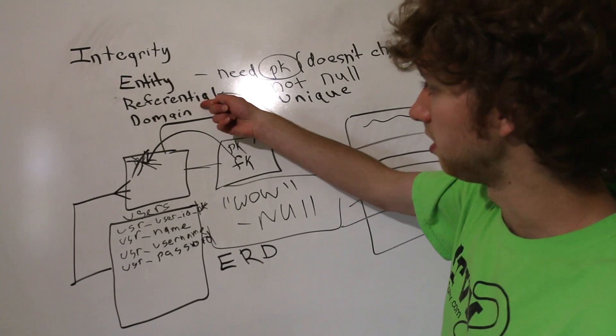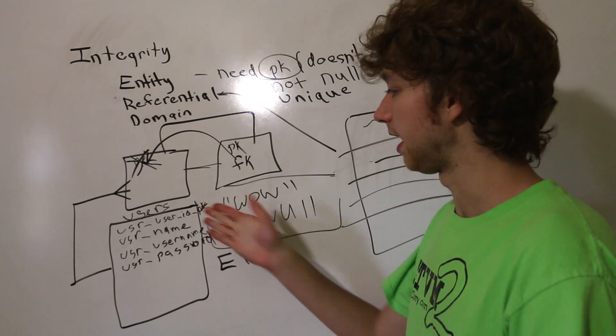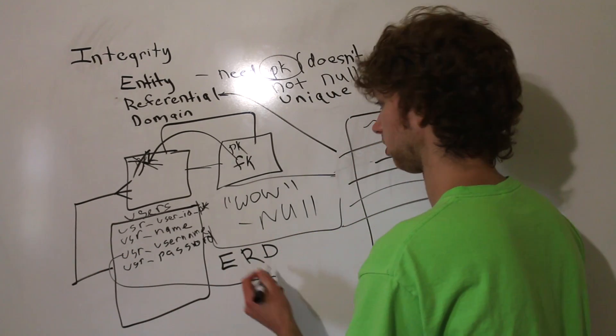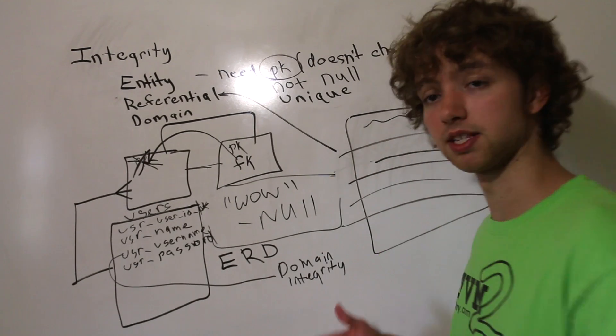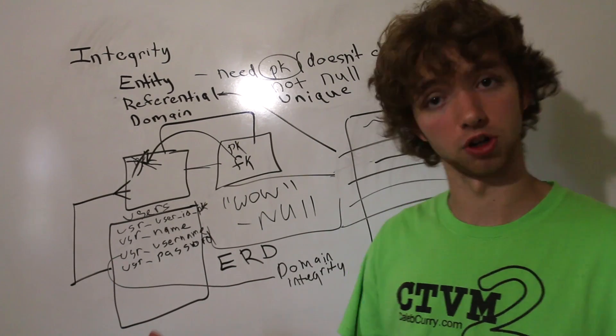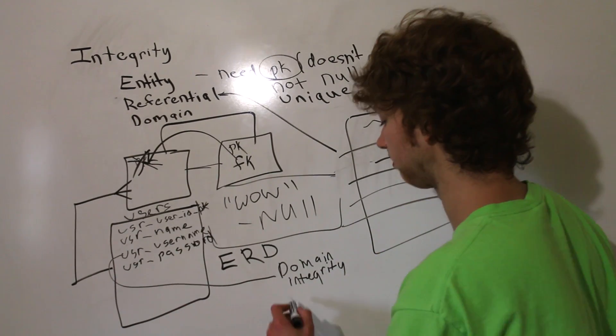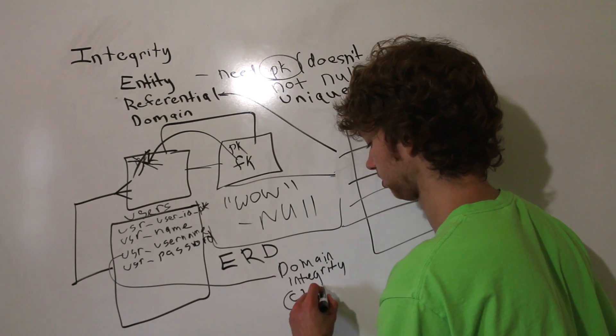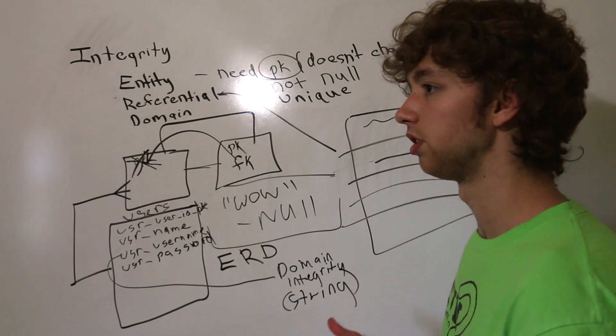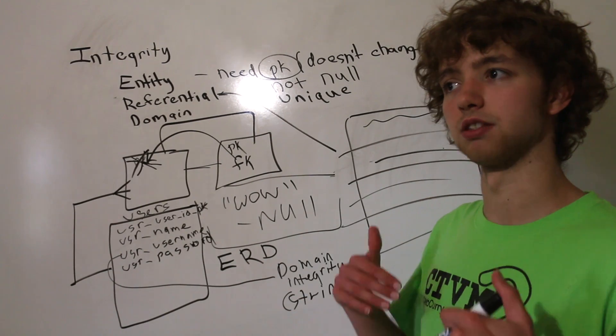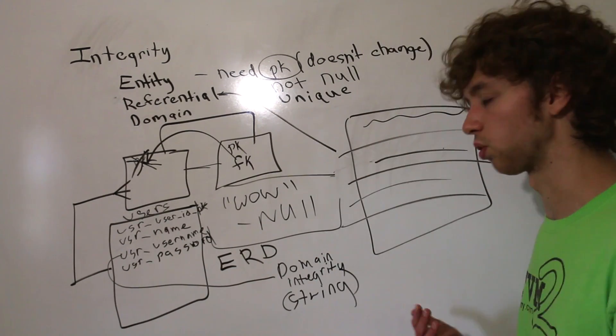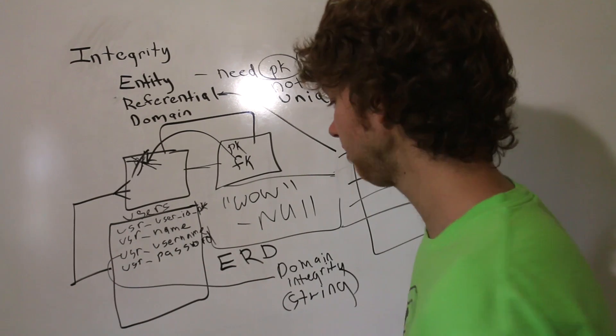But in this situation we're going to implement domain integrity by preventing certain entries into these columns. For example, the username, we can make domain integrity by saying that everybody's name should be characters. It shouldn't be a data type that is not a character. If we wanted to do that, we would give it the data type of string. For example, when we make it a string, it's not going to allow people to put the data type that's numbers or the data type of dates or the data type of true and false.